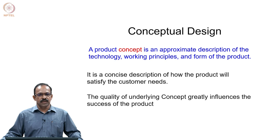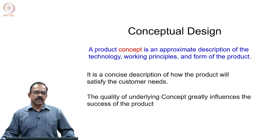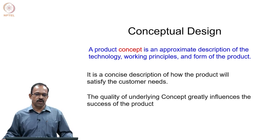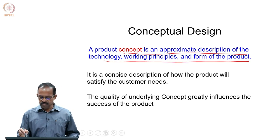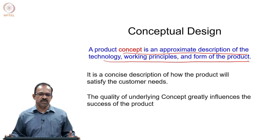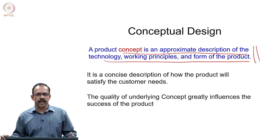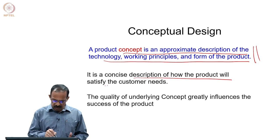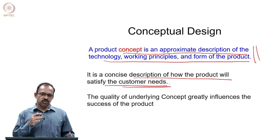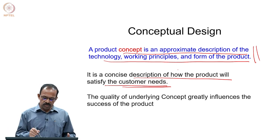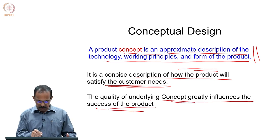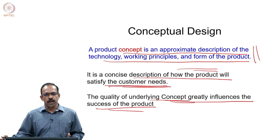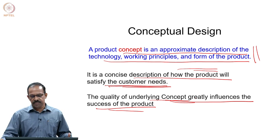The question is how do we actually develop concepts for addressing a function and improve the product. We will look at methods by which we can develop concepts and what standard methods are available for developing and choosing concepts. As mentioned last class, the product concept is an approximate description of the technology, working principles, and form of the product. It is a concise description of how the product will satisfy the customer needs. The quality of the underlying concept greatly influences the success of the product.